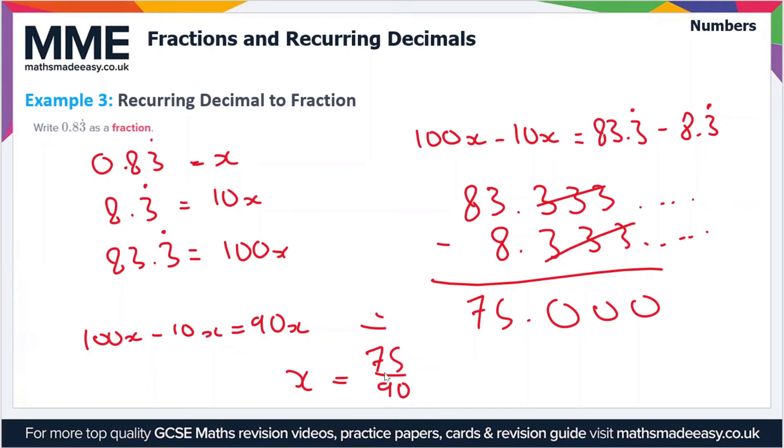Now you can cancel this down. 75 over 90, if we divide both top and bottom by 5, that's going to give us 15 over 18. And we can divide both these by 3 to give us 5 over 6. So our final answer is 0.83 recurring is equal to 5 over 6.